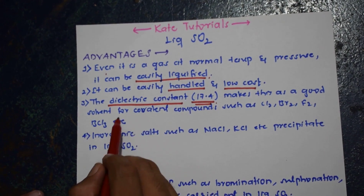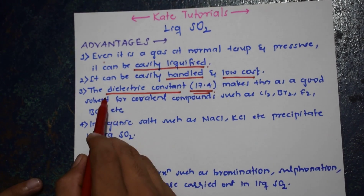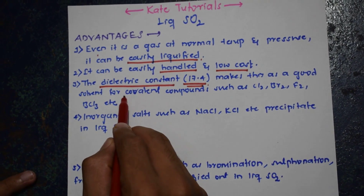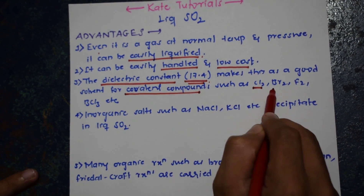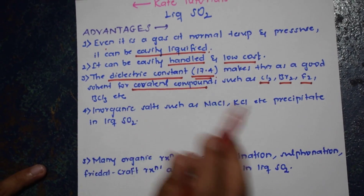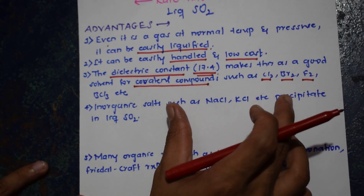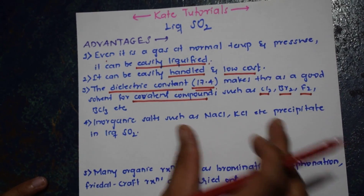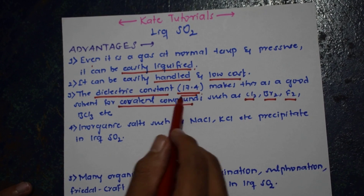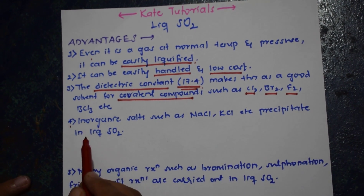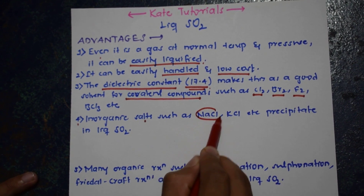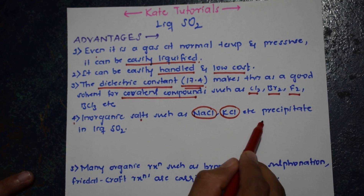The third advantage of liquid sulfur dioxide is the dielectric constant makes it a good solvent for covalent compounds such as chlorine (Cl2), bromine (Br2), fluorine (F2), and BCl3 etc. For such covalent compounds and organic compounds, it becomes a good solvent because of its dielectric constant which is 17.4. The fourth advantage is inorganic salts such as sodium chloride or potassium chloride (KCl) etc.